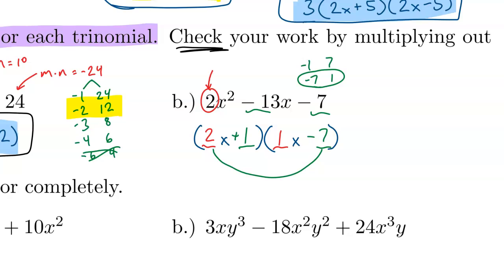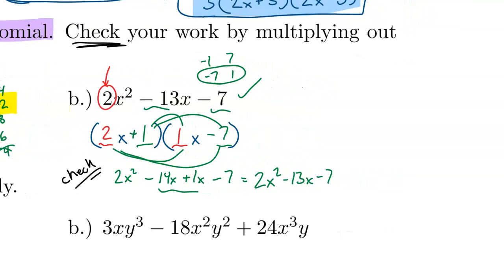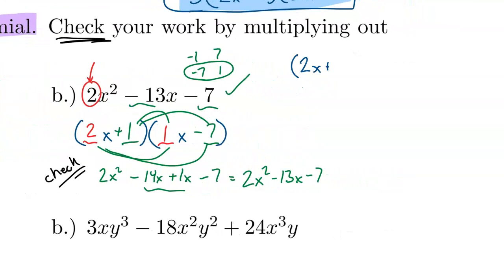Of course, as we did with the first problem, we should check. So if we FOIL, 2x times 1x is 2x squared. 2x times negative 7 is negative 14x. 1 times 1x is just positive 1x. And 1 times negative 7 is negative 7. Combining the like terms, I end up with 2x squared minus 13x minus 7, which is what we started with. So our guess worked out. Let me write this answer a little more clearly as (2x + 1)(x - 7).